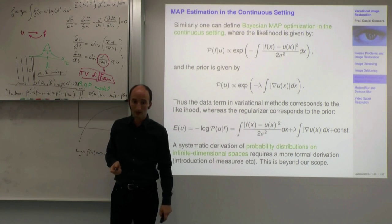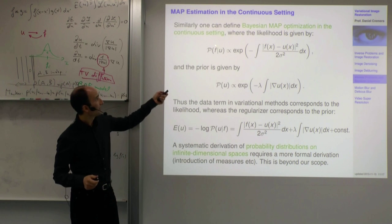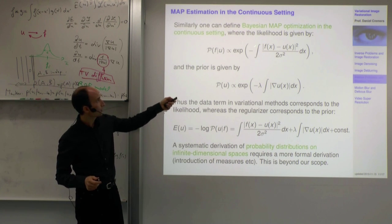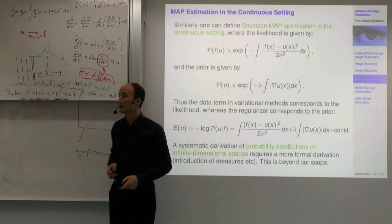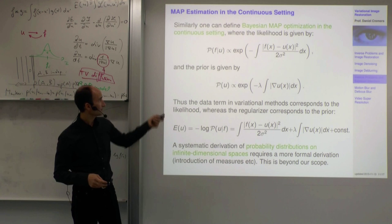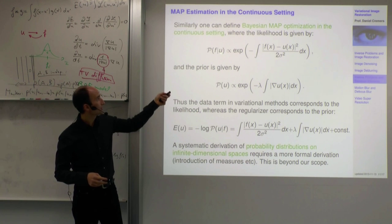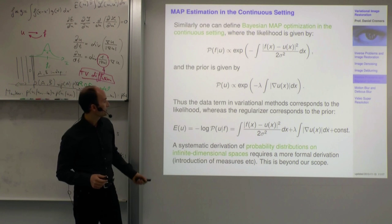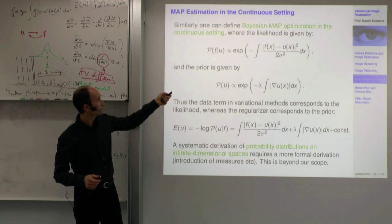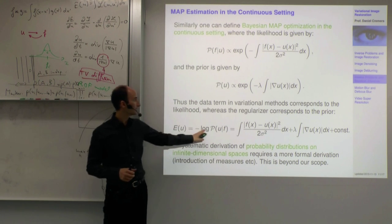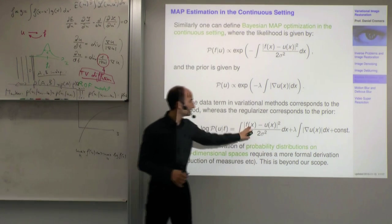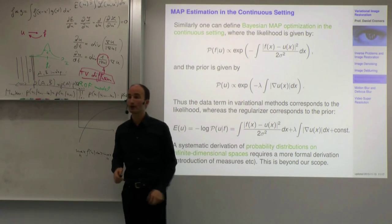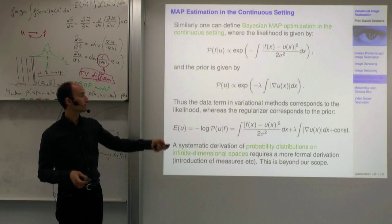You can do the same in a continuous setting. The likelihood for observation F given true image U under Gaussian noise is an integral expression — in the discrete setting we had a sum, in the continuous setting we have an integral over pixels. Similarly the prior is given by an integral expression. Taking the negative logarithm of the likelihood times prior gives the Rudin-Osher-Fatemi model: quadratic data term and total variation regularizer, plus a constant we can safely neglect.